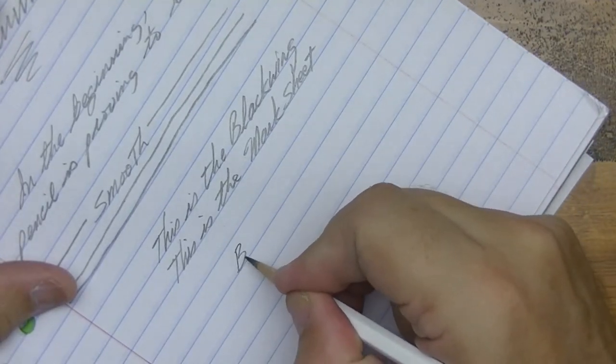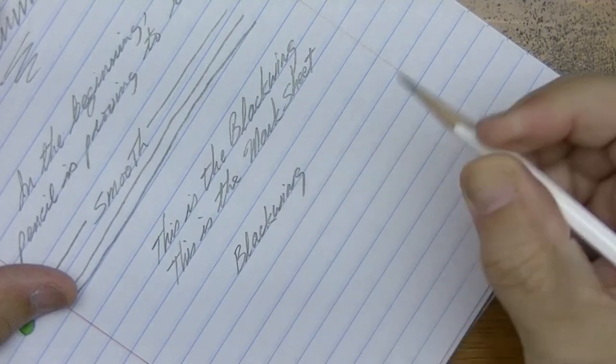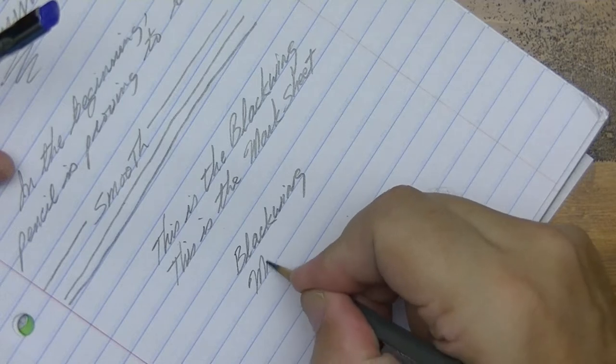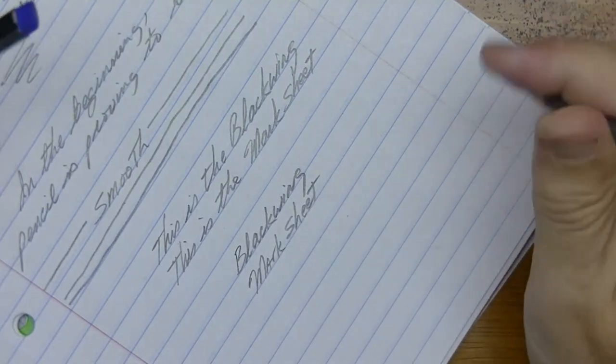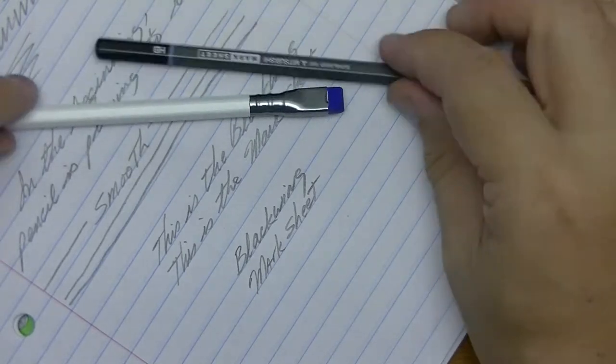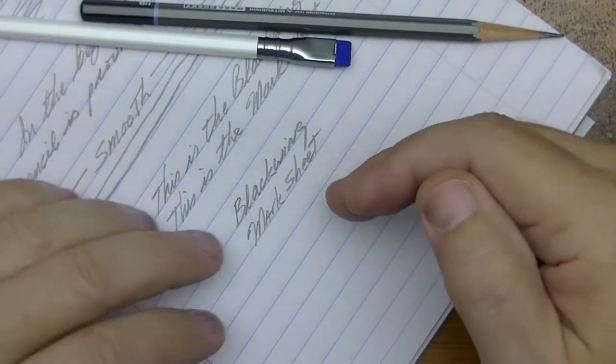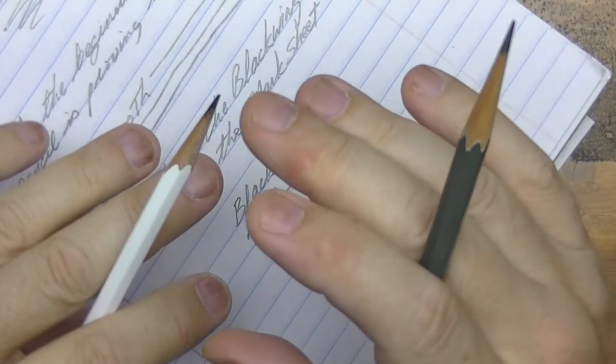All right. Blackwing. Marksheet. All right. The Blackwing edges out the Marksheet for smoothness. It feels smoother.